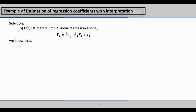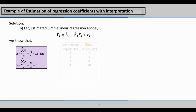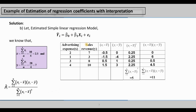The formula for beta naught is called the intercept. The formula for beta 1, called the slope, is: summation of (xi minus x-bar) times (yi minus y-bar), divided by summation of (xi minus x-bar) squared. The formula for beta naught is: y-bar minus beta 1 times x-bar.